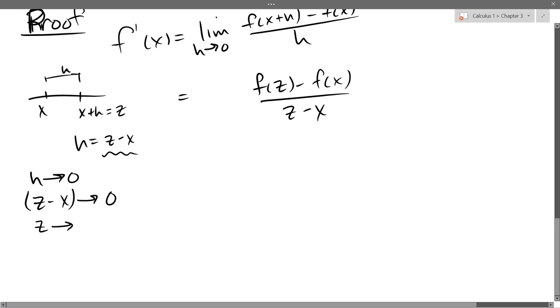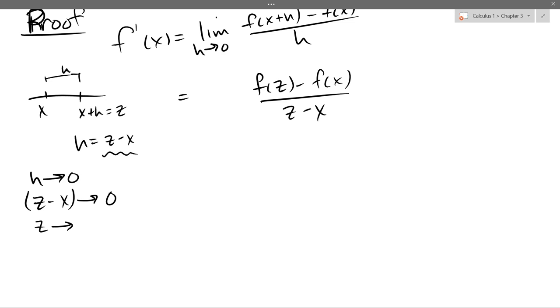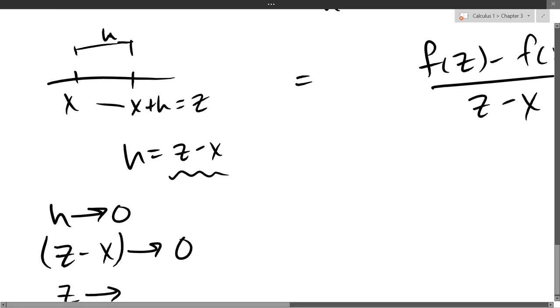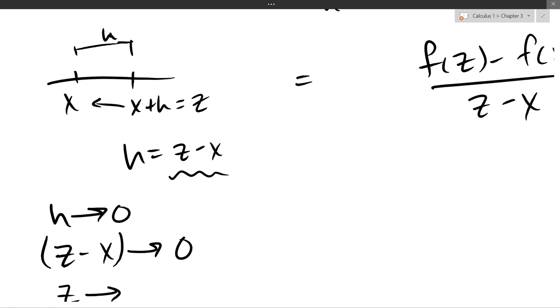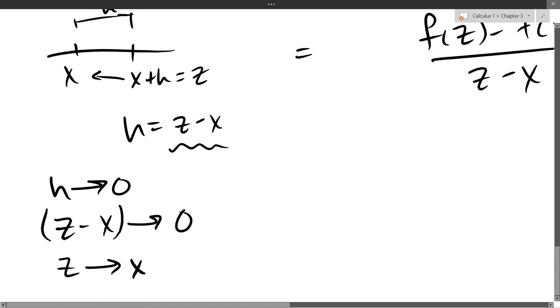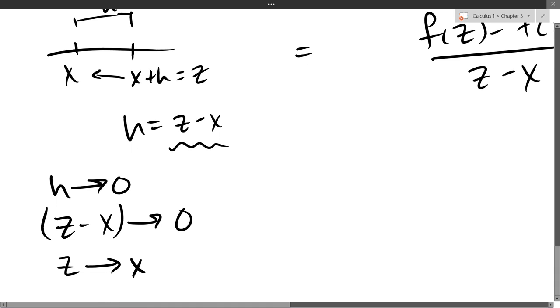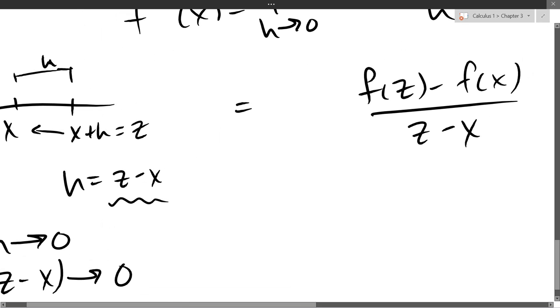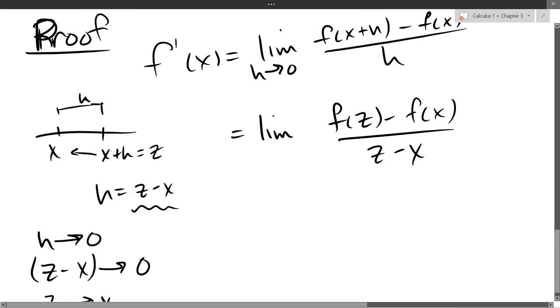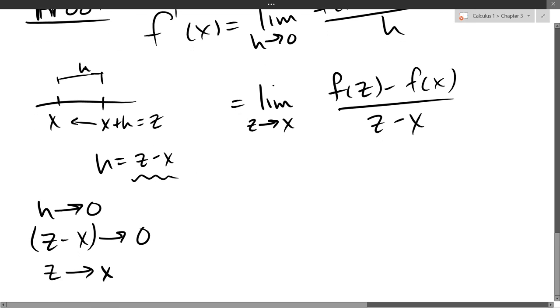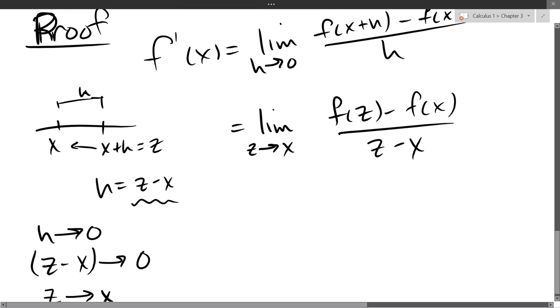So you're subtracting them and getting a small value. So that means the two numbers are getting close together. And you can see that right here. x plus h, we want that to go basically closer to x. So that means z is approaching x. So we're going to change our limit around. Instead of h's, we're going to make this substitution. So this becomes lim z approaches x. And z is just x plus h. Yeah, that's what it was before. We're just relabeling it basically. So I just made some substitutions to change what my limit value and variable are.